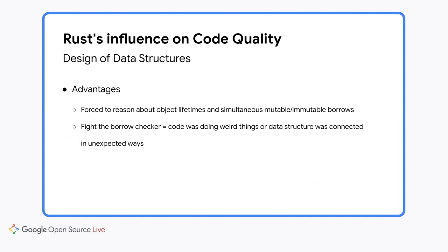In terms of designing data structures, Rust forces you to reason about things that C++ does not, like object lifetimes and simultaneous mutable and immutable borrows. I believe that thinking about these things helped to design data structures better and avoid surprising bugs. For example, whenever I fought the borrow checker, it was because the code was doing weird things or the data structure was connected in unexpected ways — some were self-referential and used these self-references for both writes and reads.